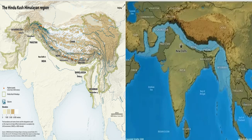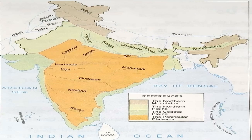India is a vast country and has a great variety of physical features like high mountains, extensive flat plains, plateaus, and fertile river valleys. India can be broadly divided into four divisions: the northern mountains, the northern plains, the peninsular plateaus, and the coastal plains and the islands. These are the four physical divisions of India.